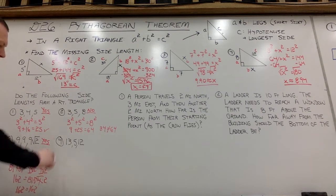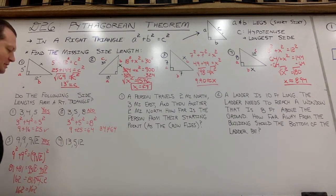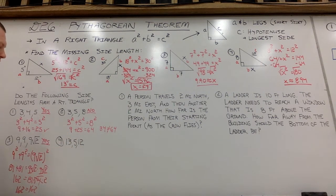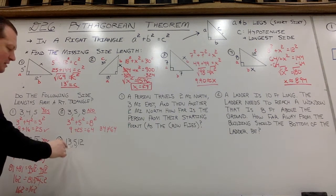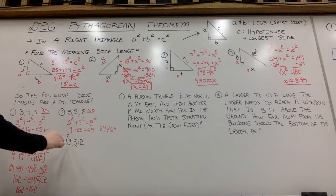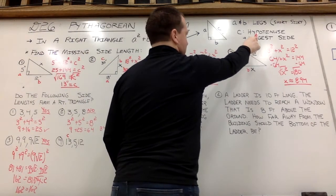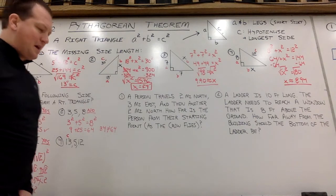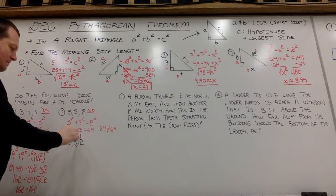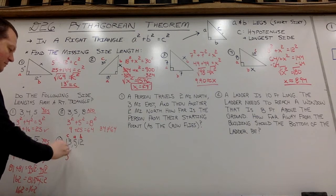All right, for the trick question for today, notice that 13, 5, 12, if you just go A, B, C order, it's not always given to you in that ascending side length. Notice 13, the first number given is the longest side. And we said the longest side is always the hypotenuse. So if I need to plug in 13 for C, 5 and 12 for A and B.